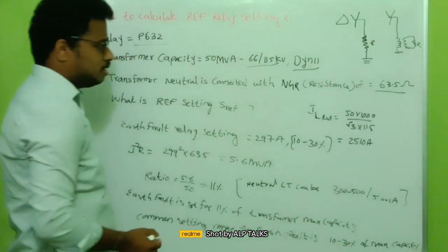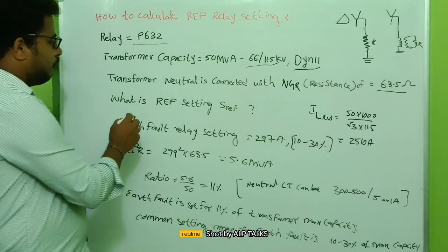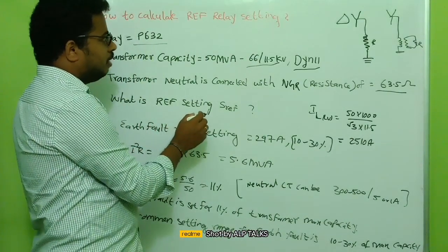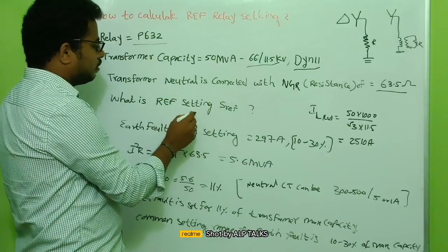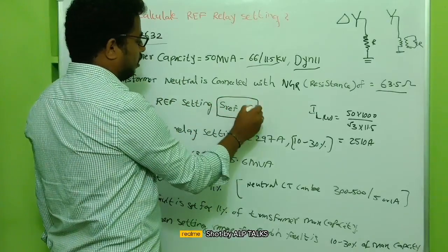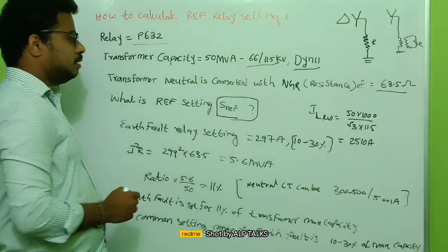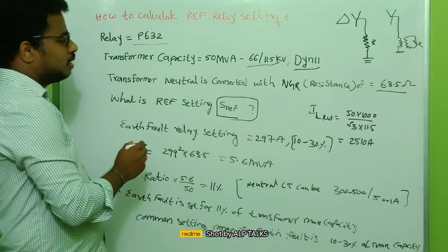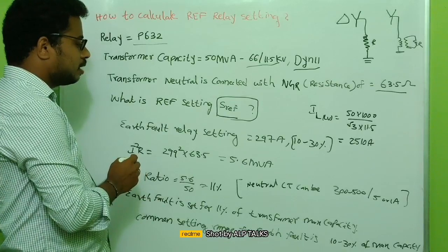So the resistance is 63.5 ohm. What is the REF setting? In a REF relay we have to set the power, the apparent power, the entire apparent power we have to set as the reference power. What is the reference power and what is the current?